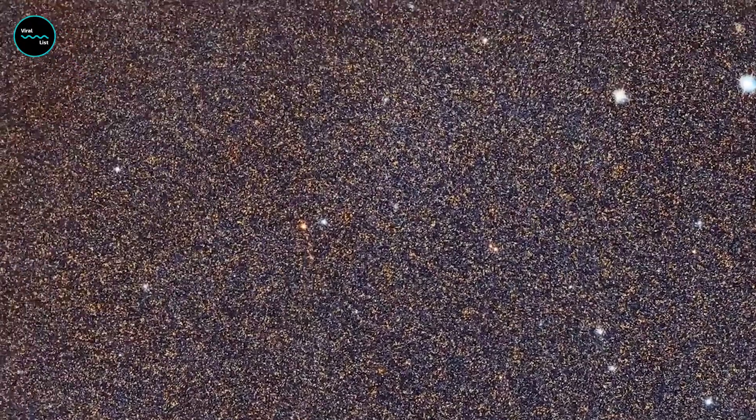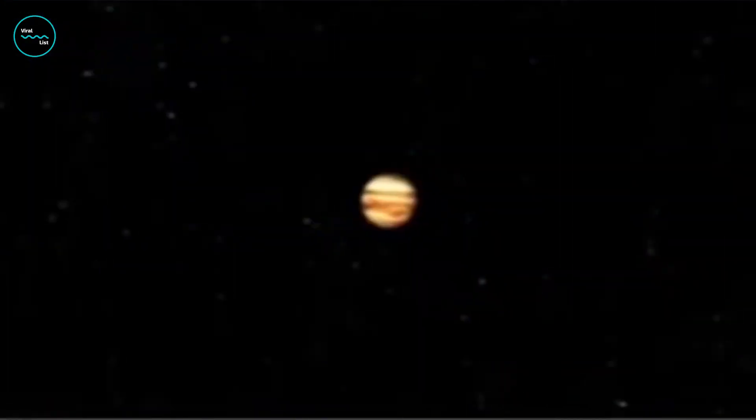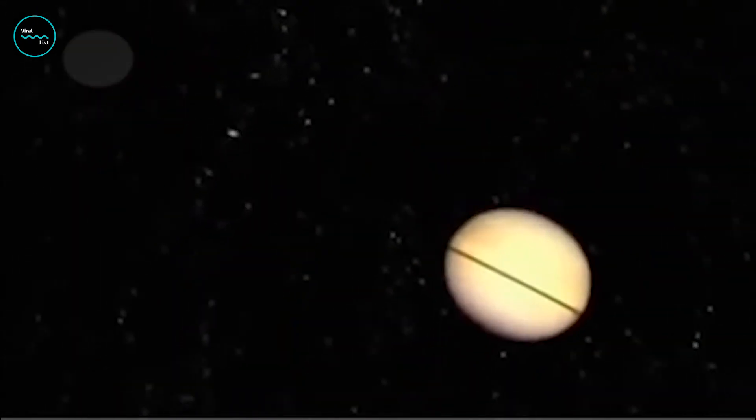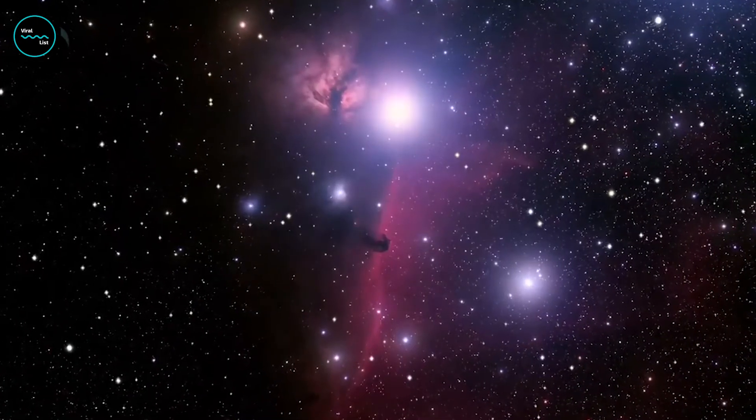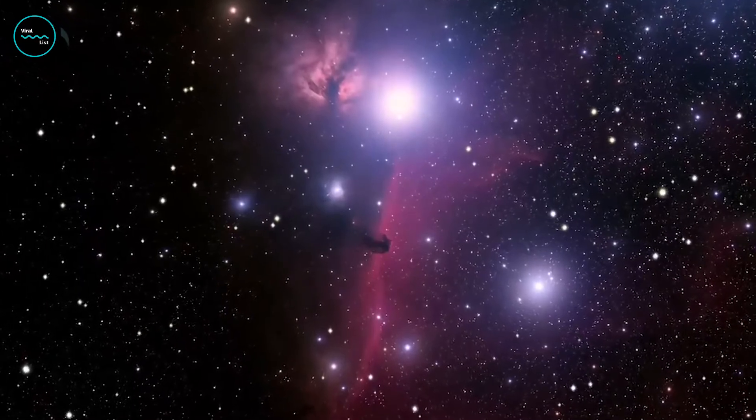The sun is relatively young, part of a generation of stars known as Population 1, which are relatively rich in elements heavier than helium. An older generation of stars is called Population 2, and an earlier generation of Population 3 may have existed, although no members of this generation are known yet.